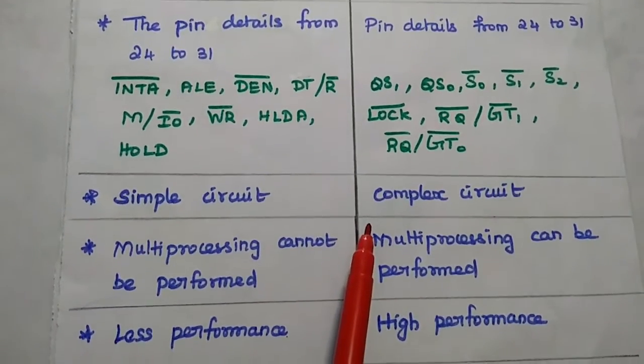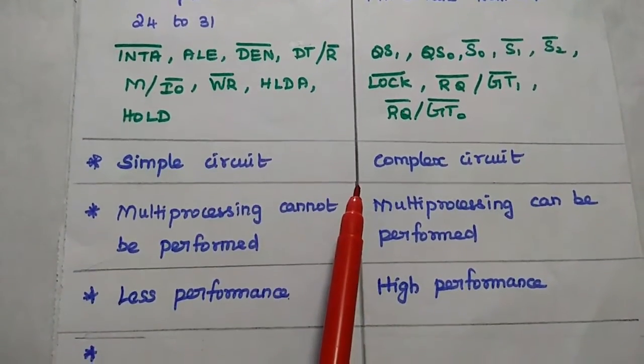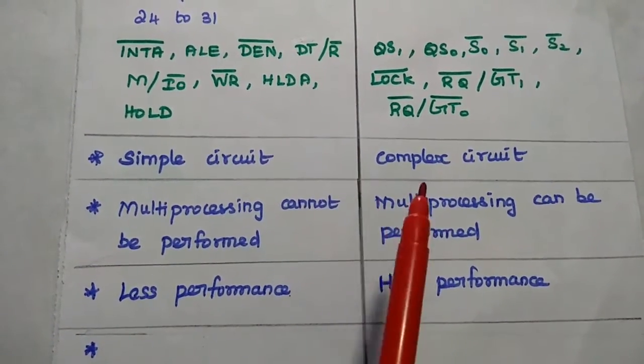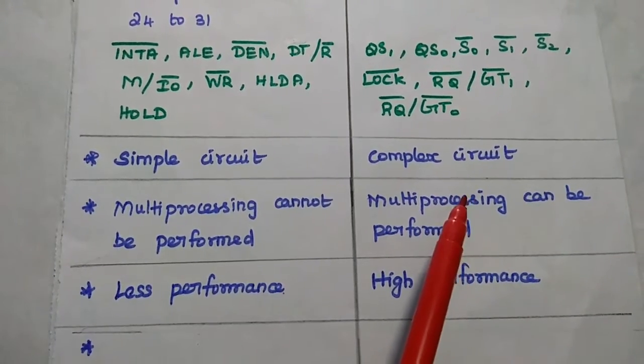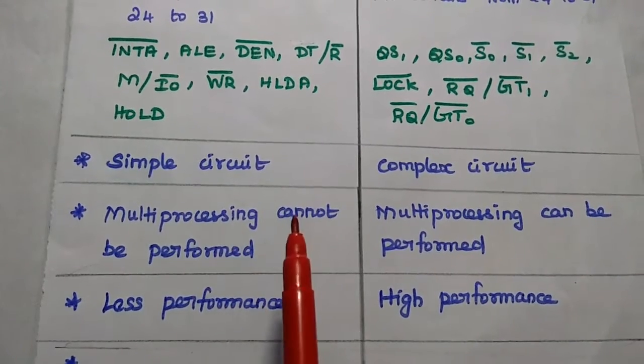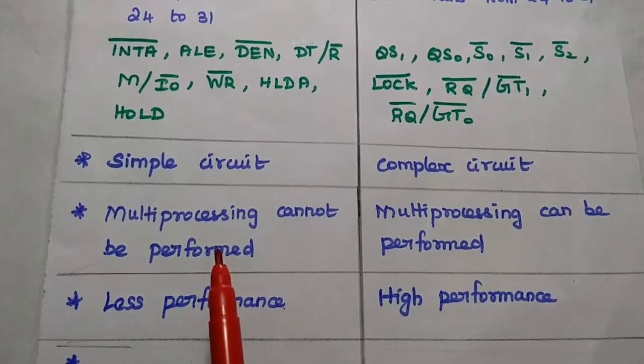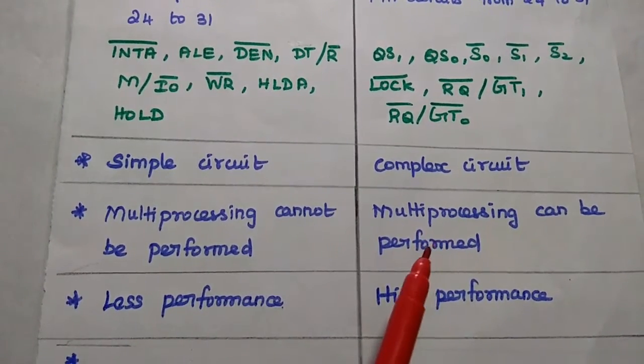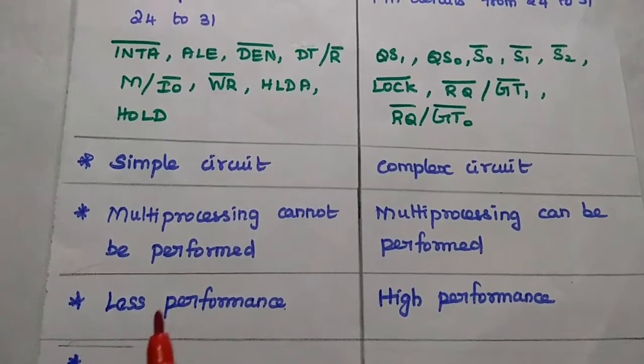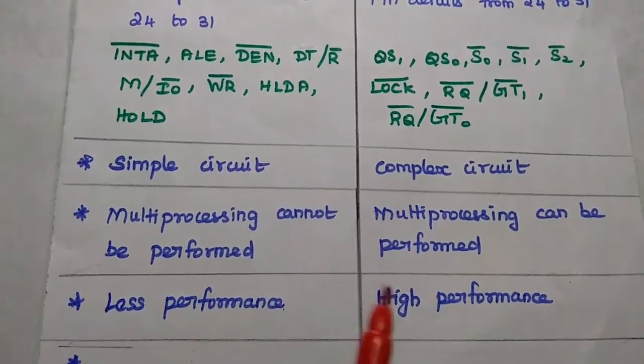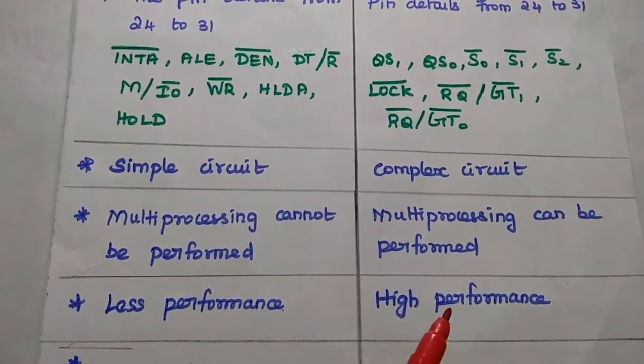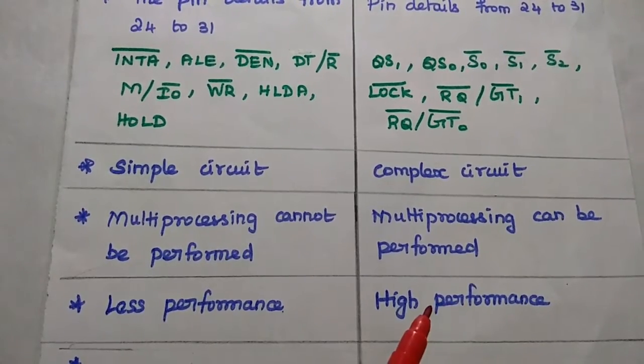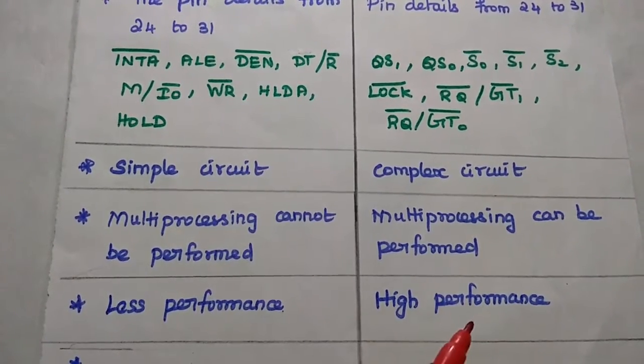The minimum mode configuration is a simple circuit. Maximum mode configuration is a complex circuit. Multi-processing is not applicable in minimum mode. Multi-processing is possible with maximum mode. Here the performance is very low. In maximum mode, it provides very high performance because it supports multi-processing concept.